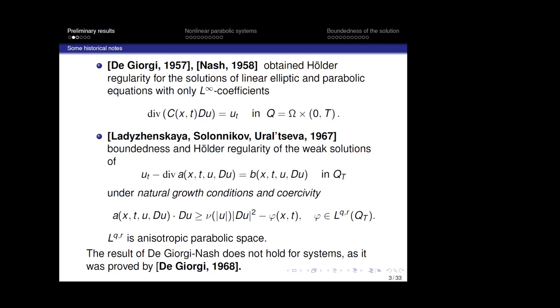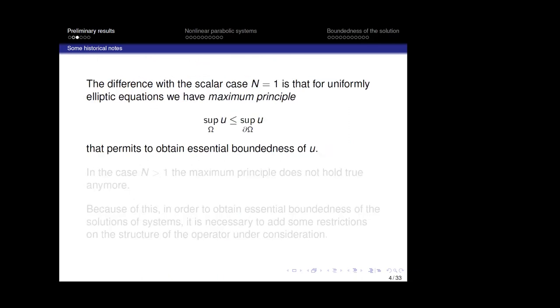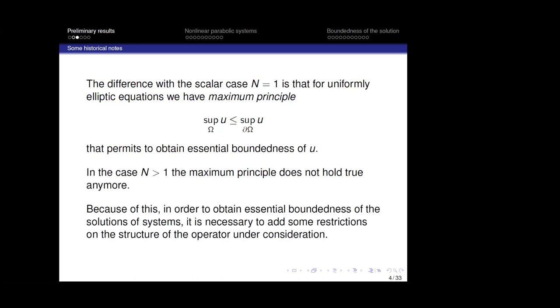It was underlined that the difference with the scalar case N=1 is that for uniformly elliptic equations we have the maximum principle, that is, we have this inequality: the sup norm of u over Q_t is less than or equal to the sup norm of u over the parabolic boundary, that permits to obtain essential boundedness of u. In the case N greater than 1, the maximum principle doesn't hold true anymore. Because of this, in order to obtain essential boundedness of the solutions of systems, it's necessary to add some restrictions on the structure of the operator under consideration.